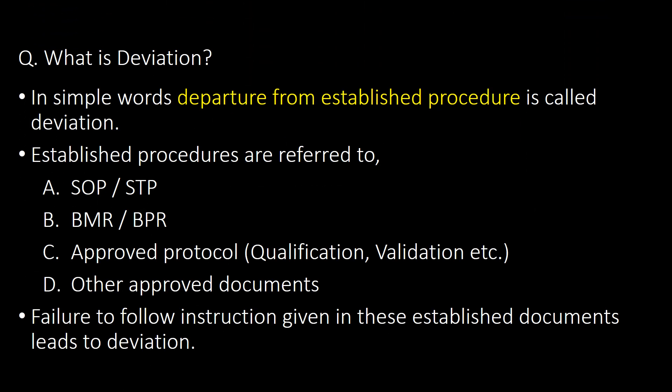What is a deviation? In simple words, a departure from an established procedure is called a deviation. Established procedures refer to SOPs, STPs, BMRs or BPRs, approved protocols like qualification protocols, validation protocols or any other approved documents. Failure to follow instructions given in these established documents leads to a deviation.